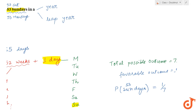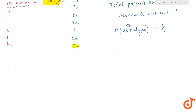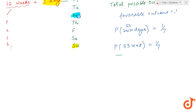What is the probability of getting 53 Wednesdays in a regular year? 53 Wednesdays is also 1 by 7, because even in that case I have just one favorable outcome — which is Wednesday — out of seven total outcomes.